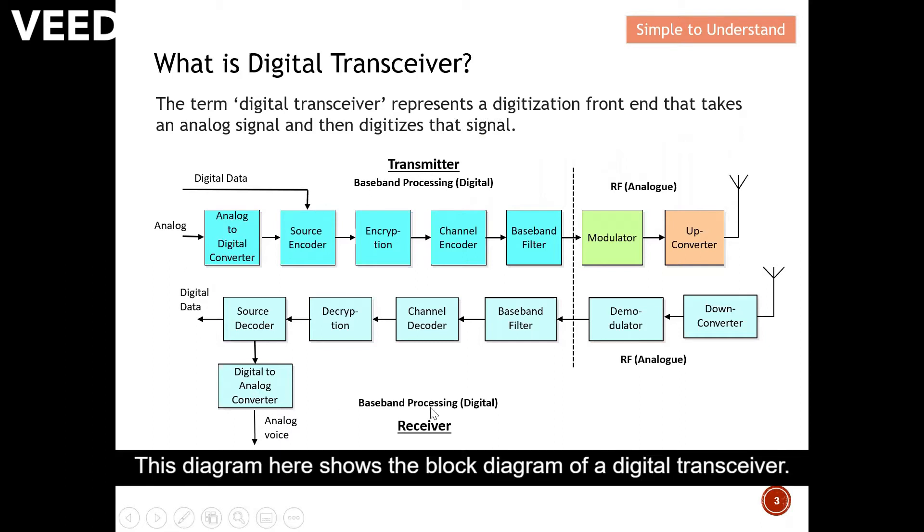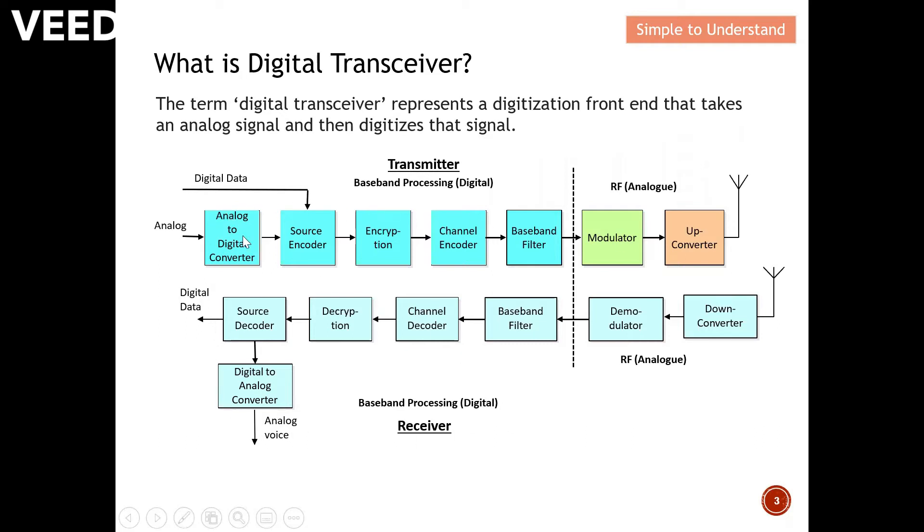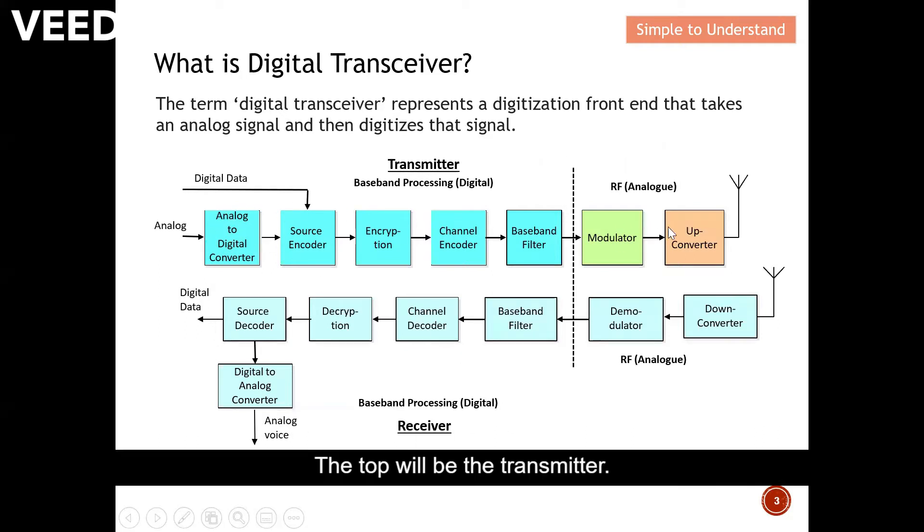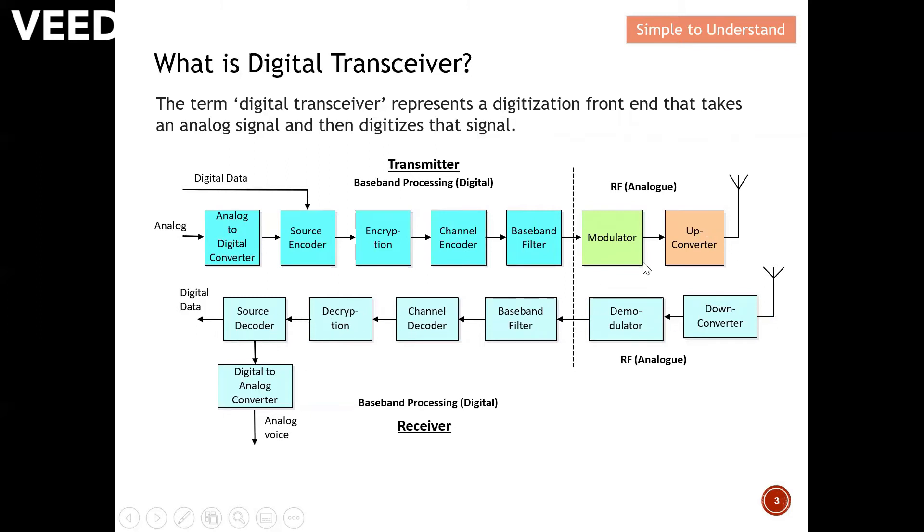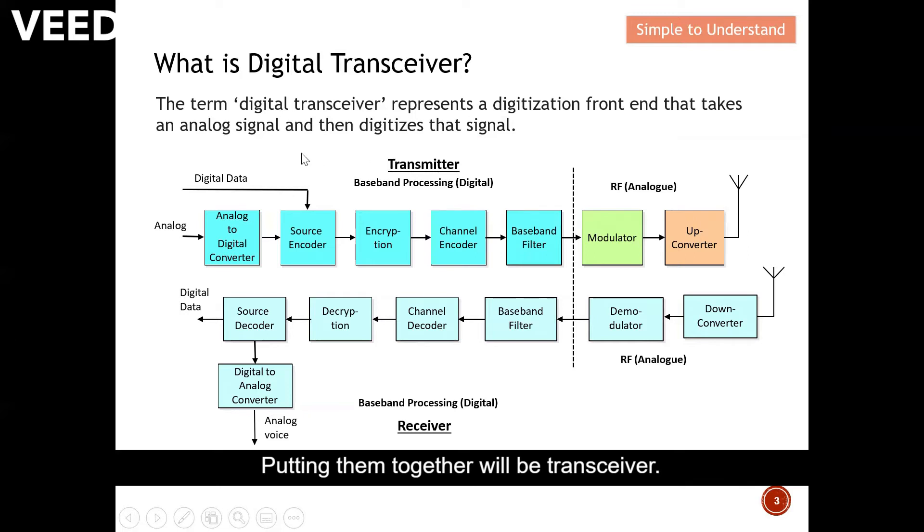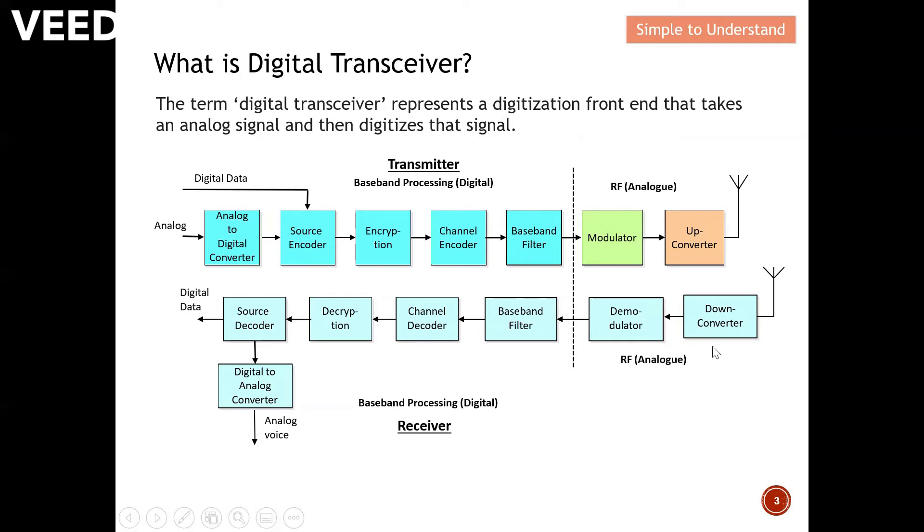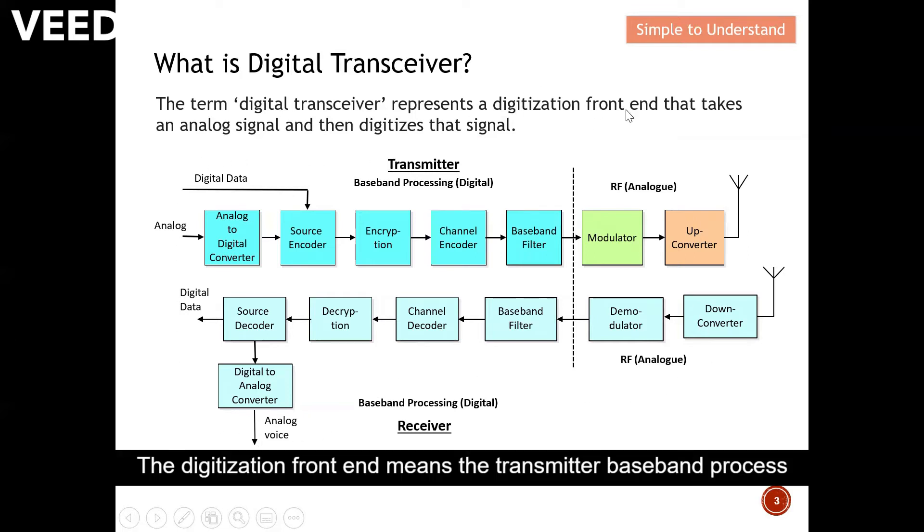This diagram here shows the block diagram of a digital transceiver. The top will be the transmitter, the bottom will be the receiver. Putting them together will be transceiver. The digitalized front end means the transmitter baseband process. They are all digital format as you can see from here. This analog signal is actually referred over here.